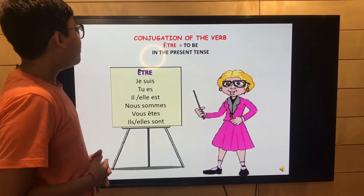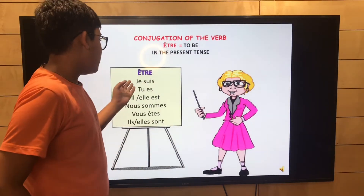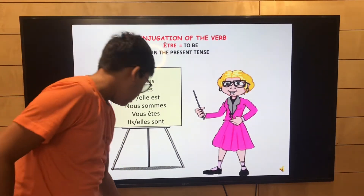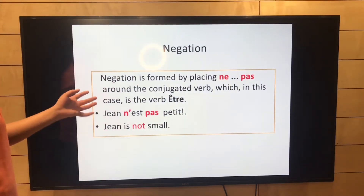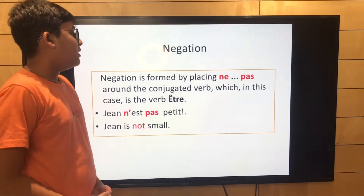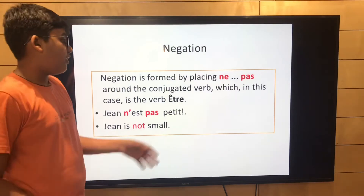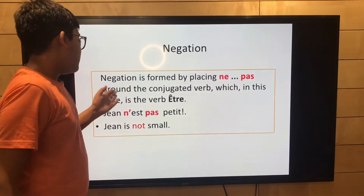Let's review the conjugation of the verb être — to be — in the present tense. For negation, it is formed by placing ne and pas around the conjugated verb, which in this case is être.